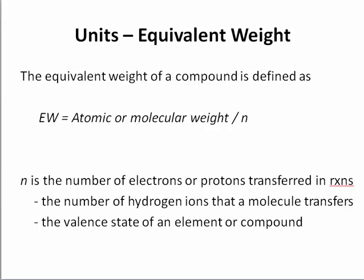Similar to normality, there is a unit called equivalent weight used in environmental chemistry. The equivalent weight of a compound is defined as the molecular weight (or atomic weight) divided by the equivalent number n. This is not the molar concentration, but the molecular weight in terms of grams per mole.